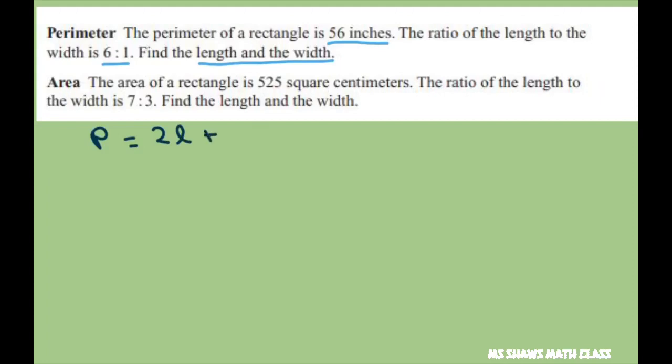Now, because length to width is 6 to 1, we're going to let L equals 6X and W equal 1X, which is just X. And we're going to substitute this into our perimeter formula.